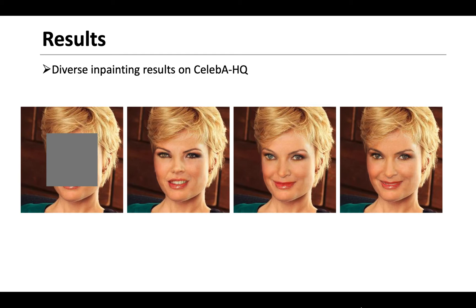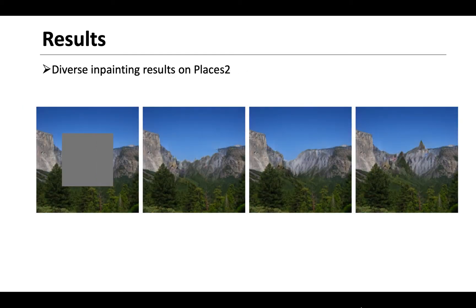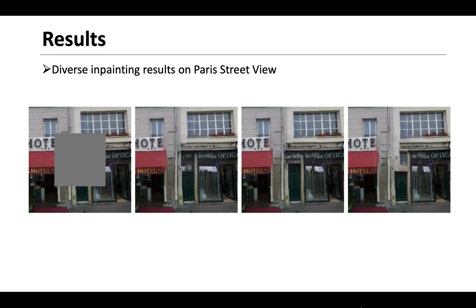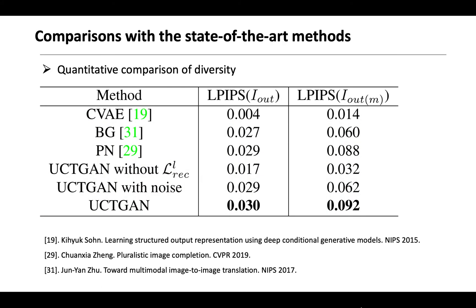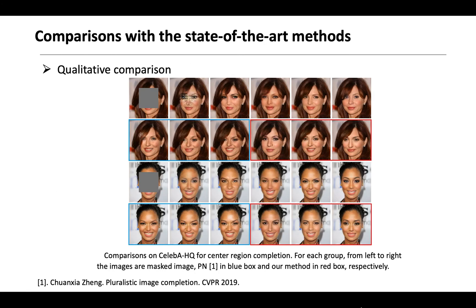Extensive experiments on CelebA-HQ, Places2, Paris StreetView, and ImageNet clearly demonstrate that our method not only generates diverse inpainting solutions from the same image to be repaired, but also has high image quality.